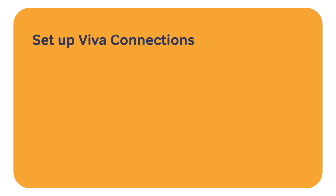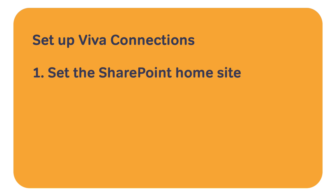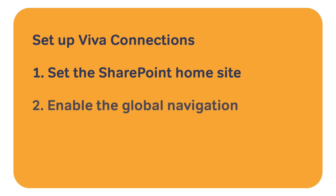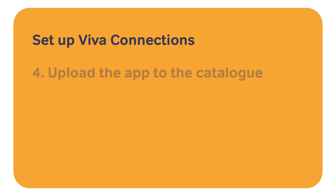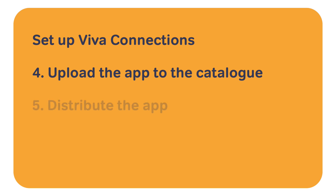The first thing we do is set up the SharePoint home site and we enable the global navigation so we prepare the SharePoint site ready for adding to the Teams app. The third step is to create the Teams app and we do that by running a script that Microsoft has provided and then we upload the app into the Teams catalogue. Then we distribute the app by pinning it to the left hand rail in the Teams app.